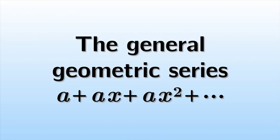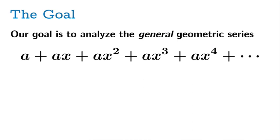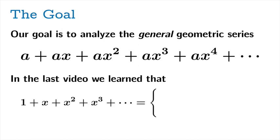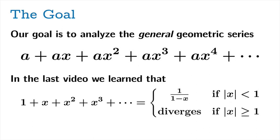Hi folks! Let's take a look at the general geometric series. Our goal is to analyze the general geometric series a plus ax plus ax squared plus etc. This is a sequel. In the last video we learned that the geometric series with common ratio x that has a first term of 1 converges to the value 1 over 1 minus x if the absolute value of x is less than 1, and otherwise diverges.